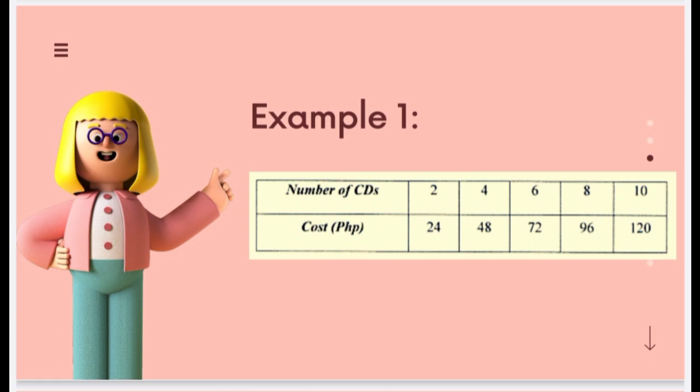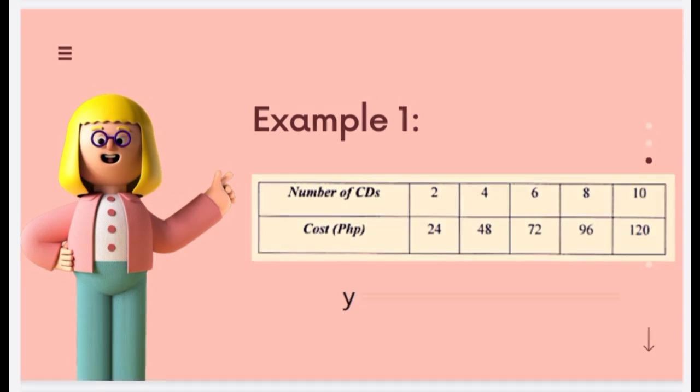Thus, the number of CDs is our independent variable X, while the cost is our Y. Going back to our table and inspecting each value, you'll pay 24 pesos for 2 CDs, 48 pesos for 4 CDs, until 120 pesos for 10 CDs. So, how much will one CD cost? You're right! It's 12 pesos each. Writing that into a function rule, we have y equals 12x, or f(x) equals 12x, because the cost, which is y, depends on the number of CDs, which is x, and each CD costs 12 pesos.